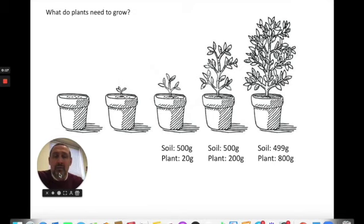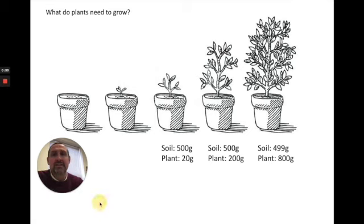This experiment, which was done hundreds of years ago, illustrates that soil is not an important component to plant growth. So what materials do plants use to grow? Well, that question is answered by the process of photosynthesis.